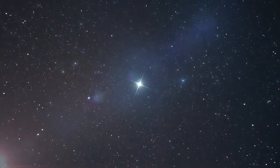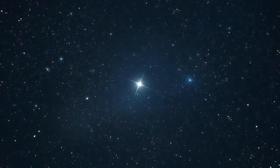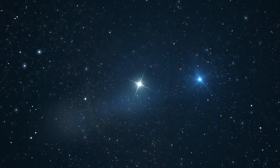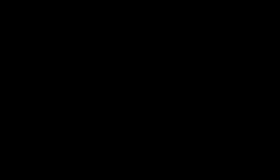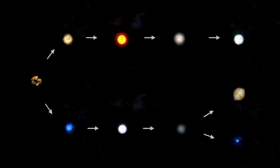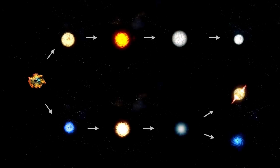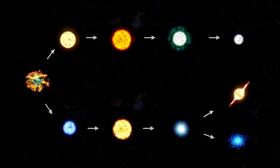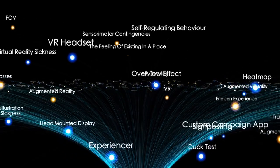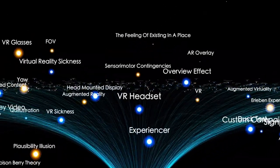Betelgeuse is approximately 764 times the size of our sun, a giant star of colossal proportions almost beyond human comprehension. Imagine a star of such magnitude that, if it were to replace our sun, its surface could extend past the orbit of Mars.